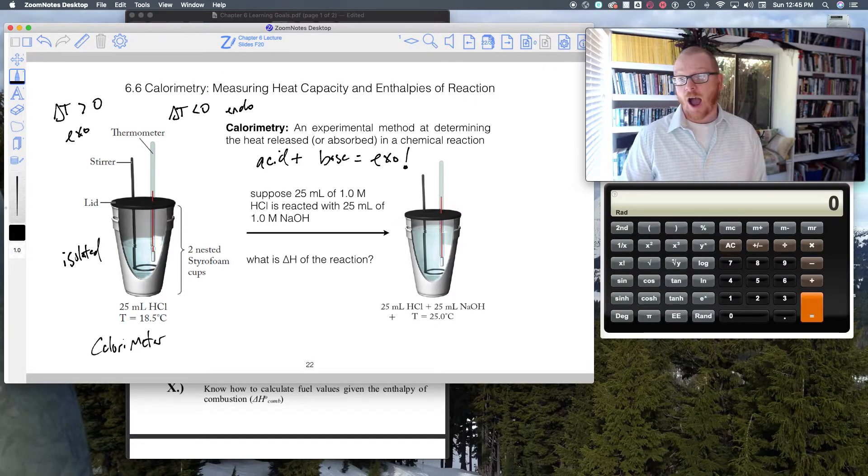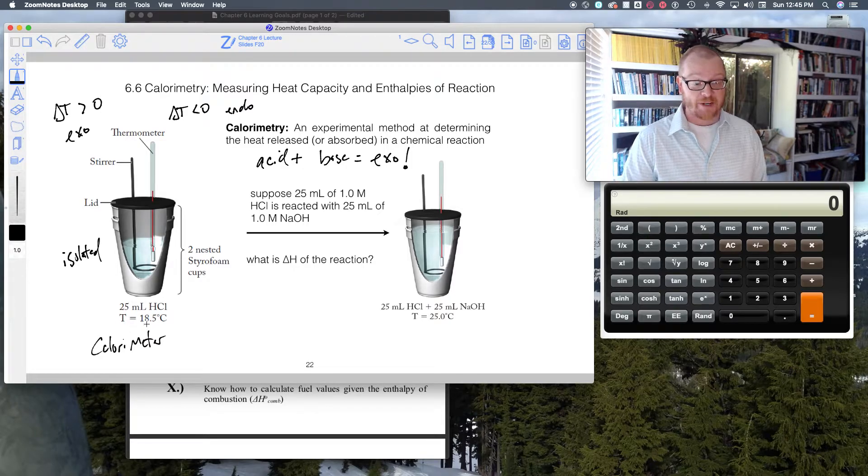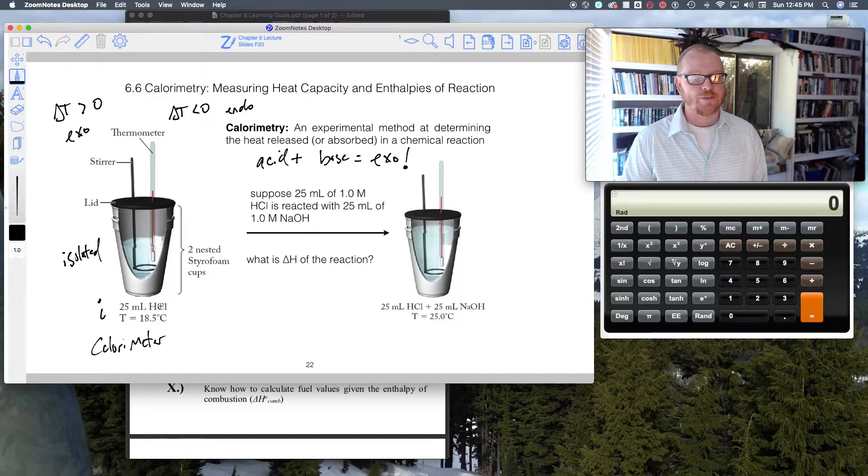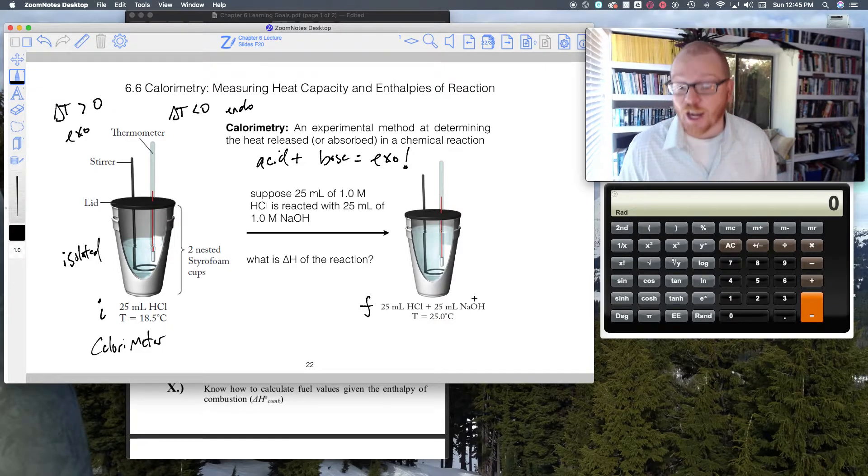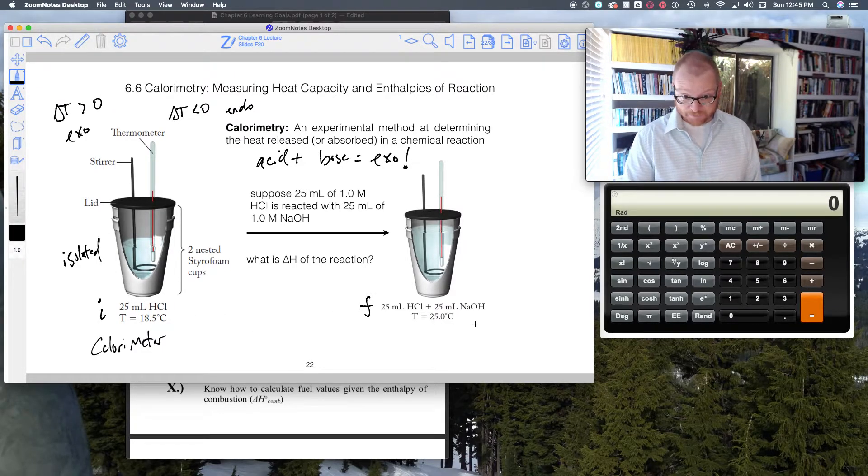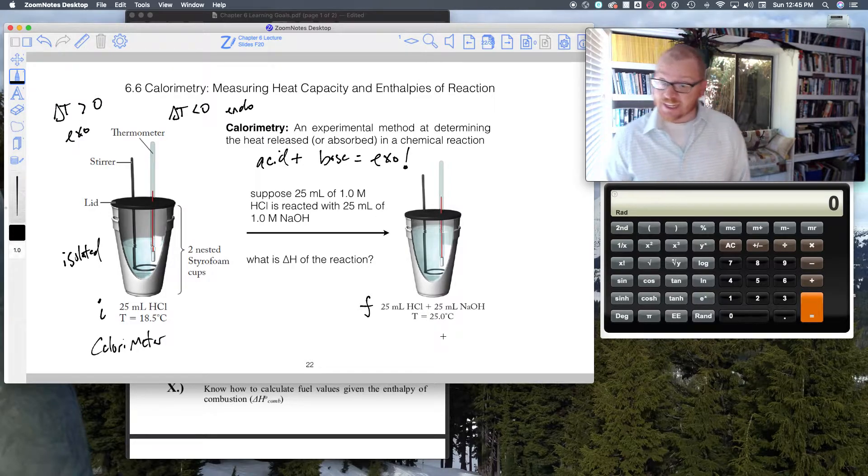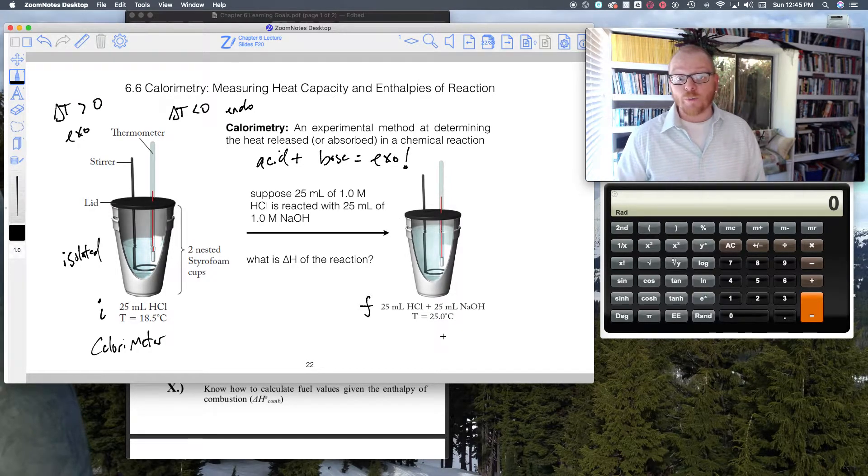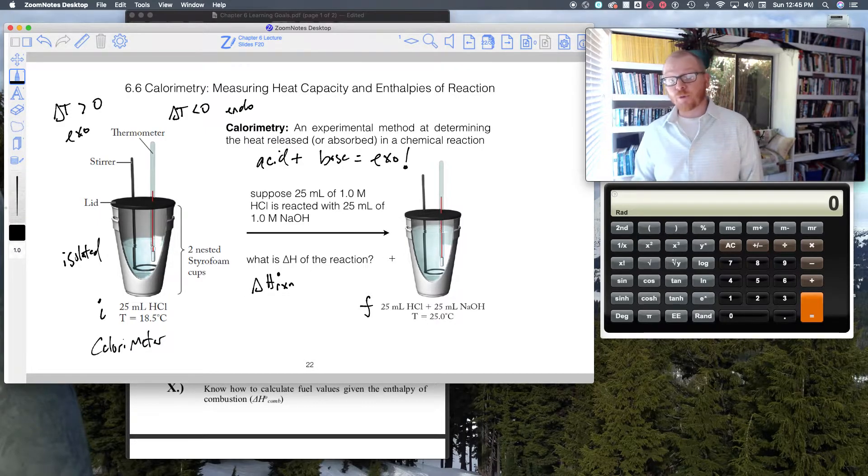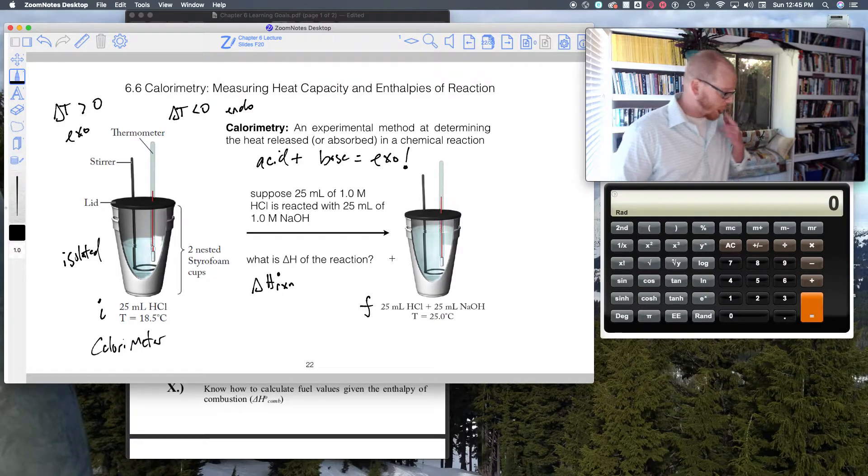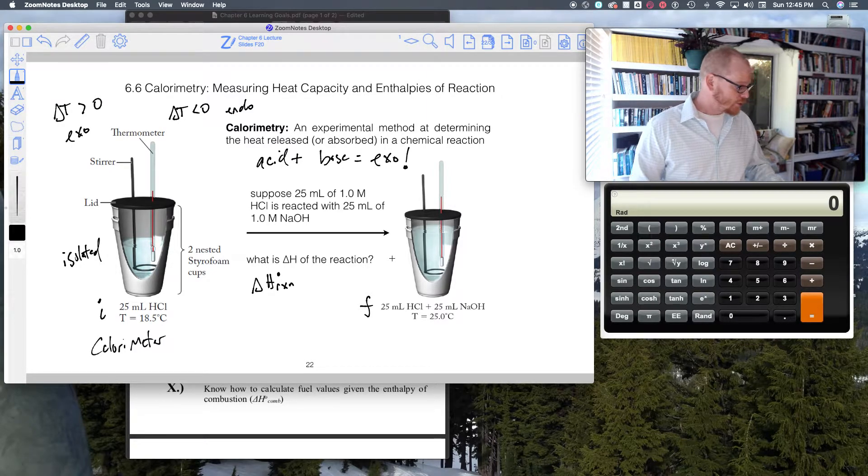This wants to release heat, but because it's in this isolated container, it can't release heat. So what we do in calorimetry is measure the change in temperature of this reaction. If we were doing an endothermic reaction in this calorimeter, we would see the temperature decrease. Delta T will be positive for an exothermic reaction and negative for an endothermic reaction in a calorimeter.